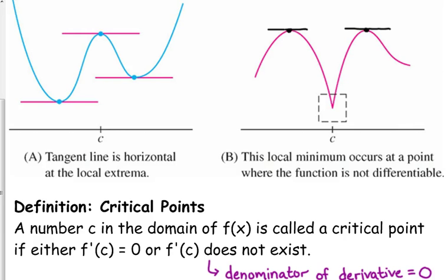A number c is called a critical point if either f prime of c is zero, or f prime of c does not exist, which typically means the denominator of the derivative equals zero. So critical points come from either the derivative equaling zero at that point, or the derivative not existing at that point.